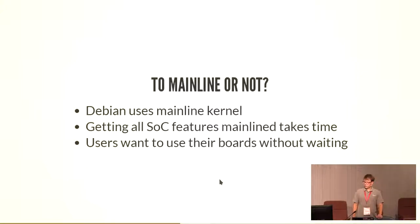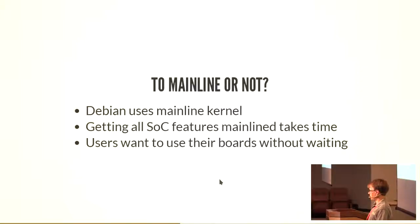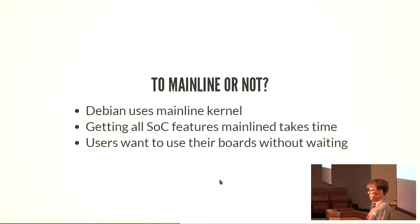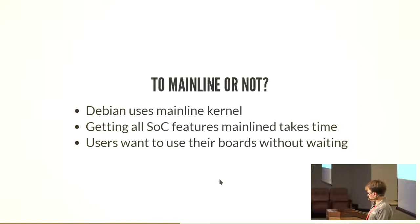There's also the issue, especially if you want to use FAI with the Debian kernel, that we use the mainline kernel quite religiously — we don't have the resources to support every vendor kernel available. But end users already have their boards and there's no mainline code yet available for them. Usually you have to wait months or even years before the SoC and board features are all mainlined — if ever. So we need to find a way to let end users install their own kernel.